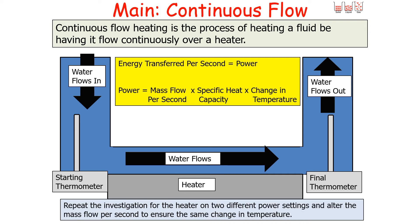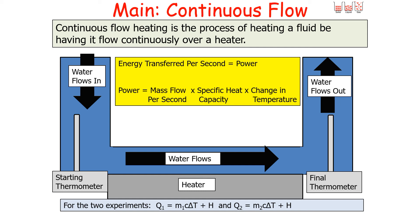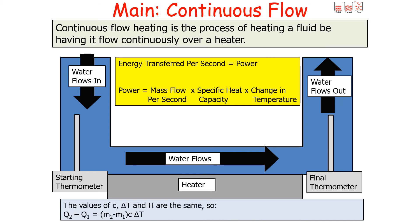Repeat the investigation with the heater on two different power settings, altering the mass flow per second to ensure the same temperature change ΔT for both runs. For the two experiments: Q₁ = m₁cΔT + H and Q₂ = m₂cΔT + H. Since c, H, and ΔT are the same in both experiments, subtracting gives Q₂ − Q₁ = (m₂ − m₁)cΔT. Rearranging, the specific heat capacity c = (Q₂ − Q₁) / ((m₂ − m₁) × ΔT).